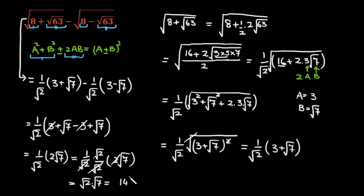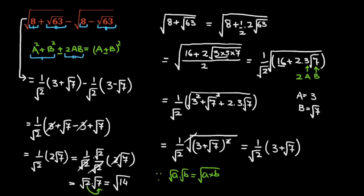So this is equal to √14 — because we know the law of radicals: √a times √b equals √(a times b). Similarly I have multiplied these two numbers: √2 times √7 equals √14. So √14 is my final answer. I hope you like this video. Thanks for watching.